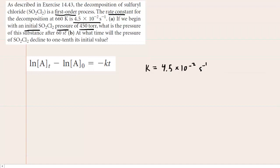So we can say that the initial concentration, if you will, although it really is a pressure, is equal to 450 torr.